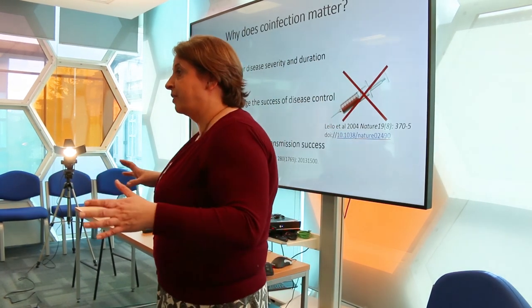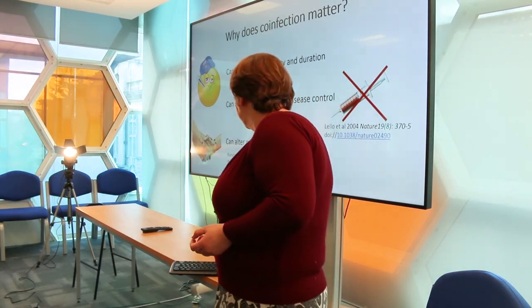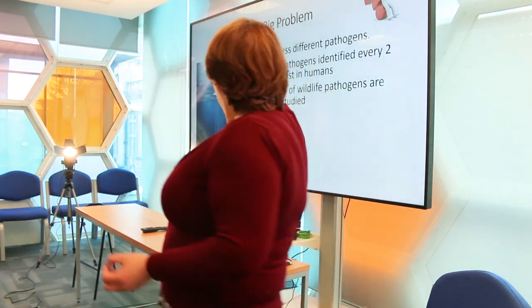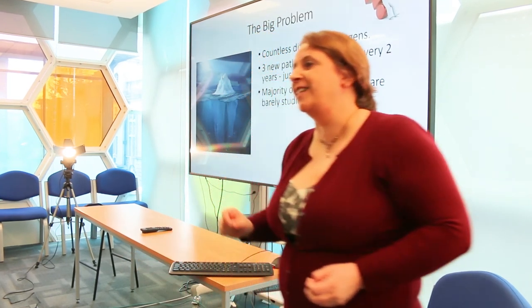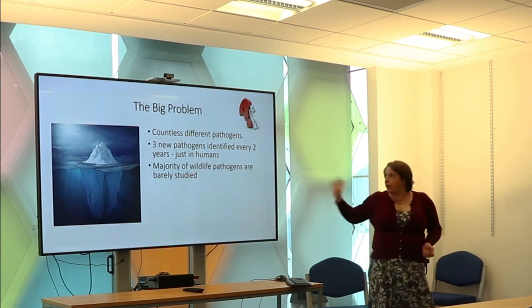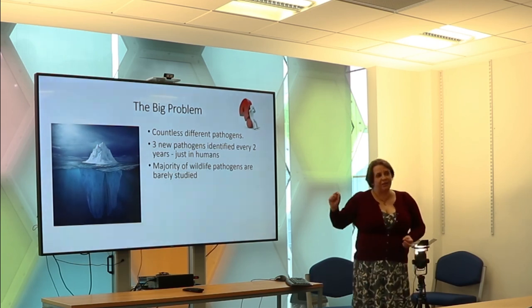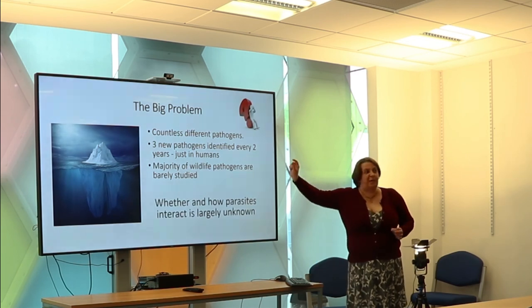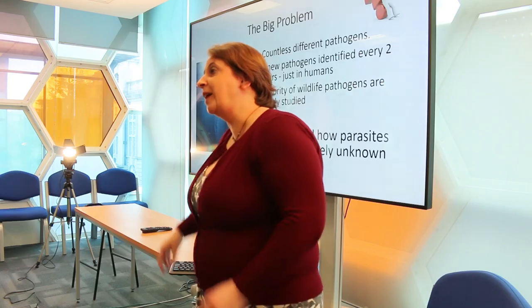The problem is big. Most things are co-infected, and those co-infections — the interactions between parasites — can vastly alter what's going on in that infection. But there are millions of parasites. If we think about all of the organisms on Earth, almost everything is parasitised, even the fungi. There are three new pathogens identified in humans alone every two years, and the majority of wildlife parasites are virtually unstudied. Not only do we have all of these parasites, but they can mix in countless complex combinations. What we know about interactions is the very tip of the iceberg; what we don't know is pretty much unknown.